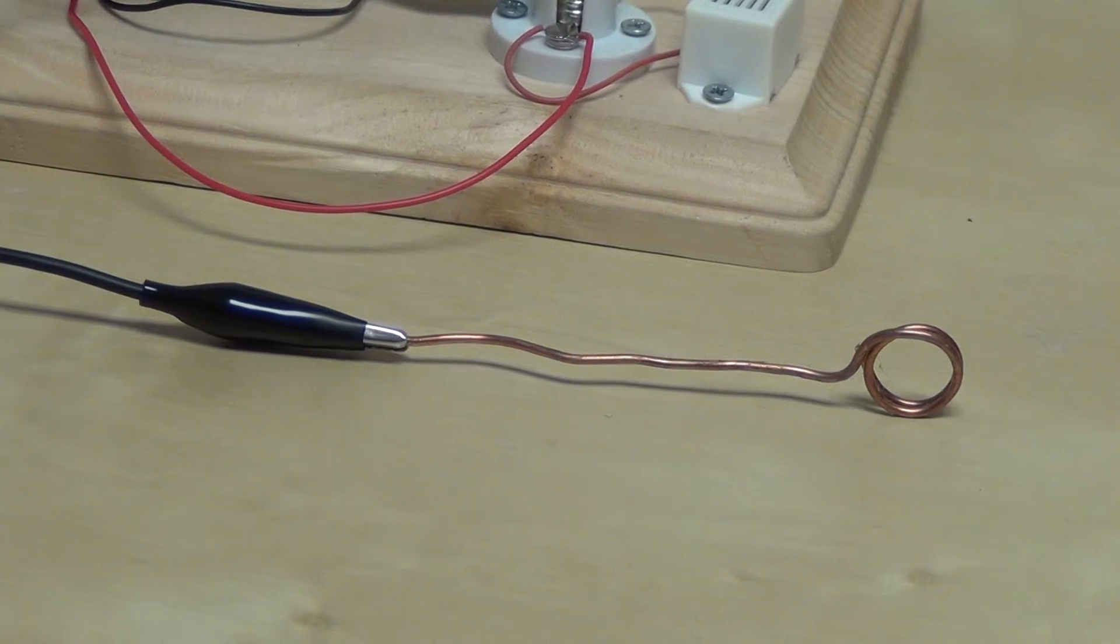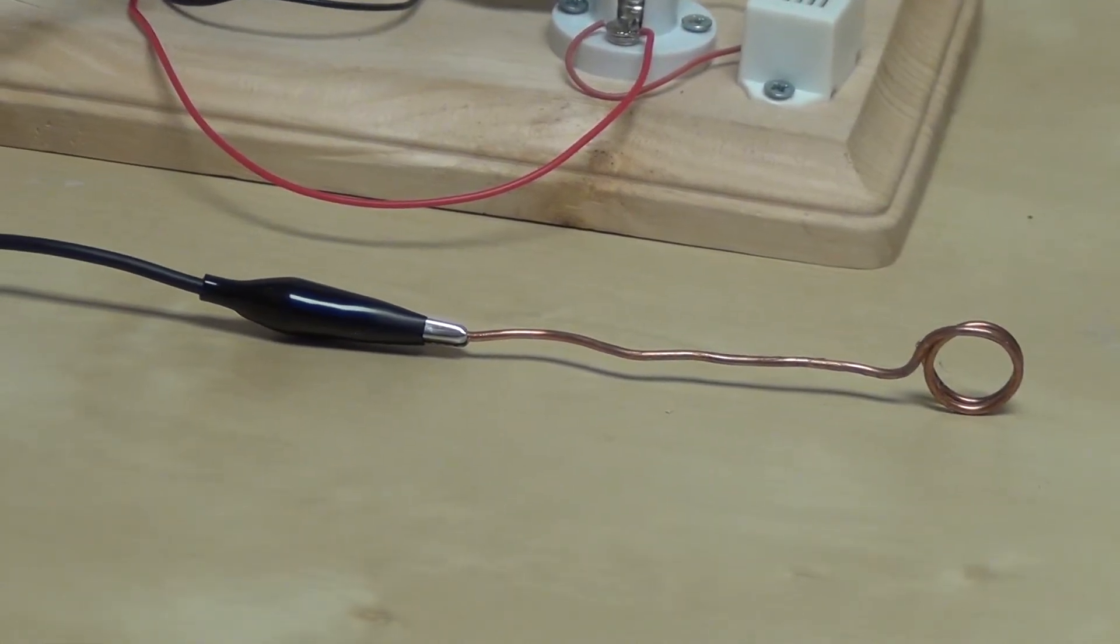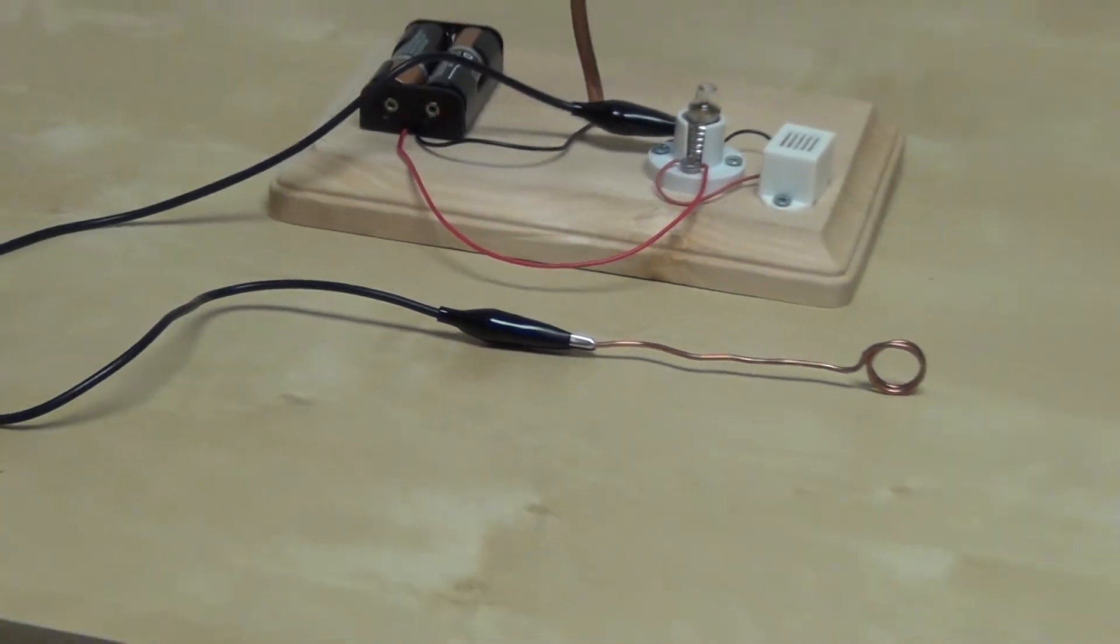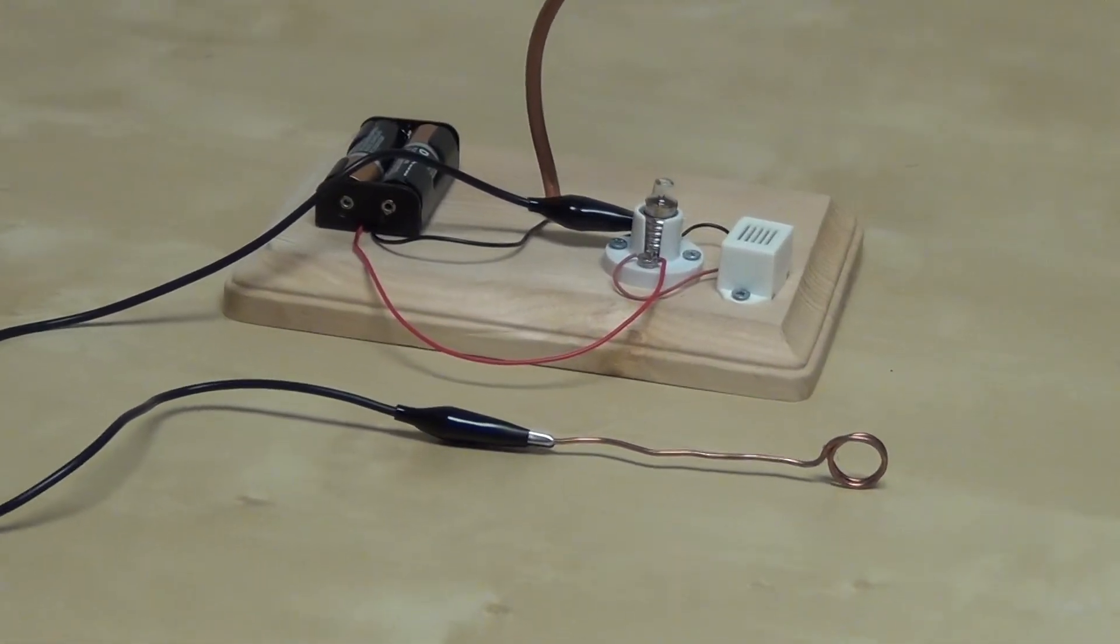At the end of the rod is an alligator clip which is connected to one end, and the other end is connected to one side of the lamp holder.